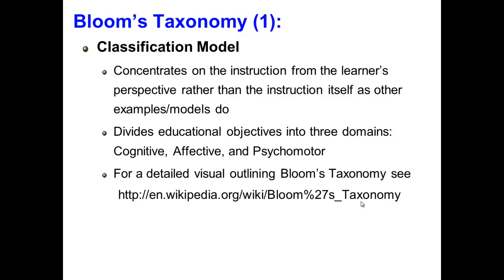Let's begin our discussion by examining Bloom's Taxonomy. Bloom's Taxonomy is more of a classificational model than it is a design model. It concentrates on the instruction from a learner's perspective, in contrast to the instruction itself, which is commonly done in many of the other Instructional Design Models. Bloom's Taxonomy refers to the different learning objectives that educators set for students, and it divides educational objectives into three domains: 1. Cognitive, 2. Affective, and 3. Psychomotor. It also categorizes learning into six main areas that follow an approximate progression of complexity and higher thinking involvement, from simple memorization to critical evaluation.